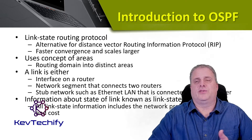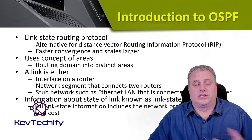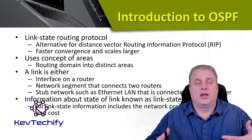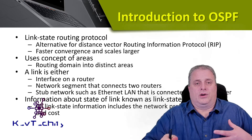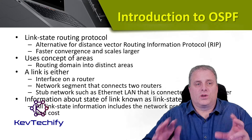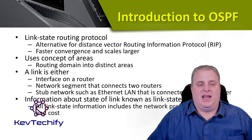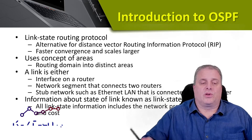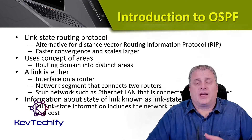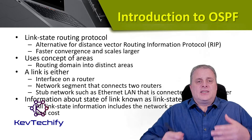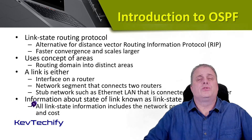OSPF keeps track of three different types of links. The first is the interface on a router. The second is a network segment that connects two different routers. And the third is a stub network — like an Ethernet LAN connected to a single router. The information about a link's state is known as its link state. All link state information includes the network prefix, network length, and cost. As you go through more devices and more networks, that cost increases. OSPF prefers to use lower cost networks.